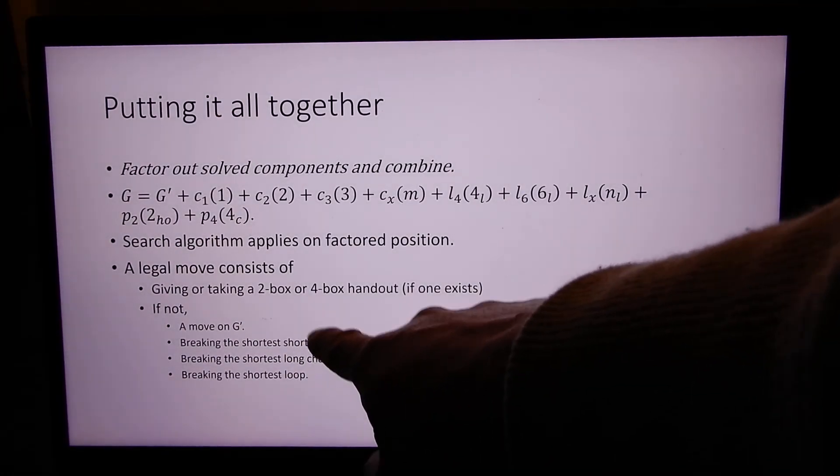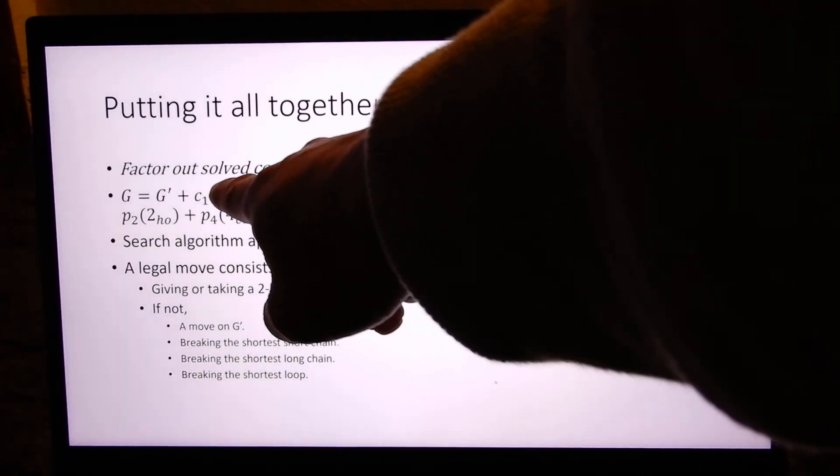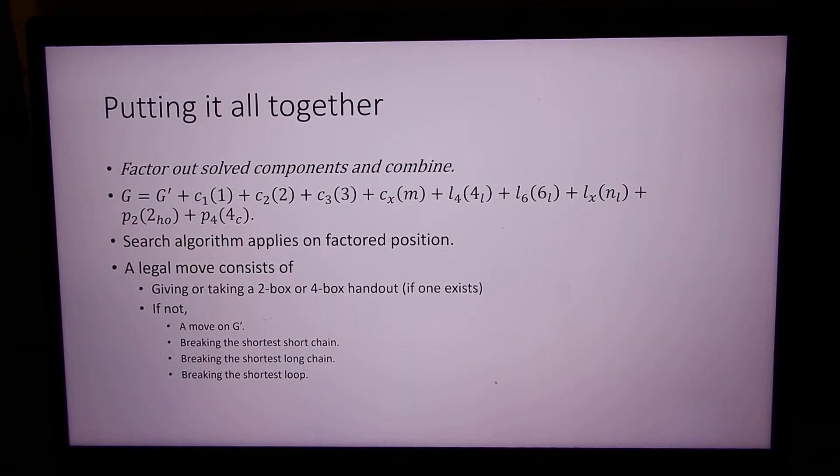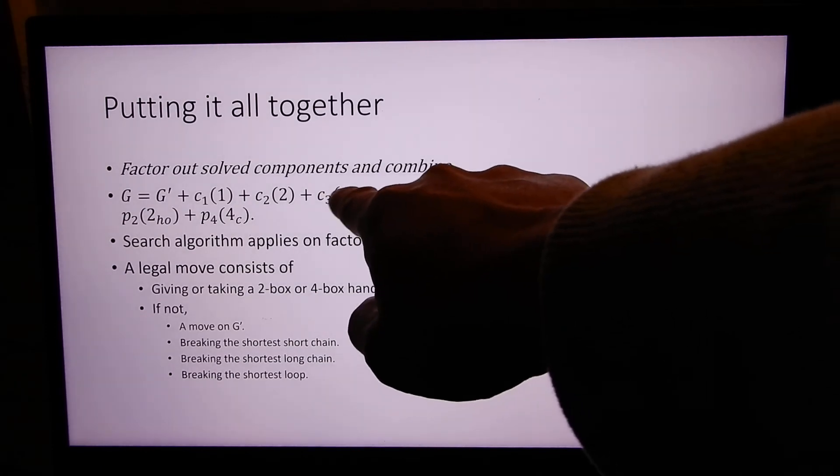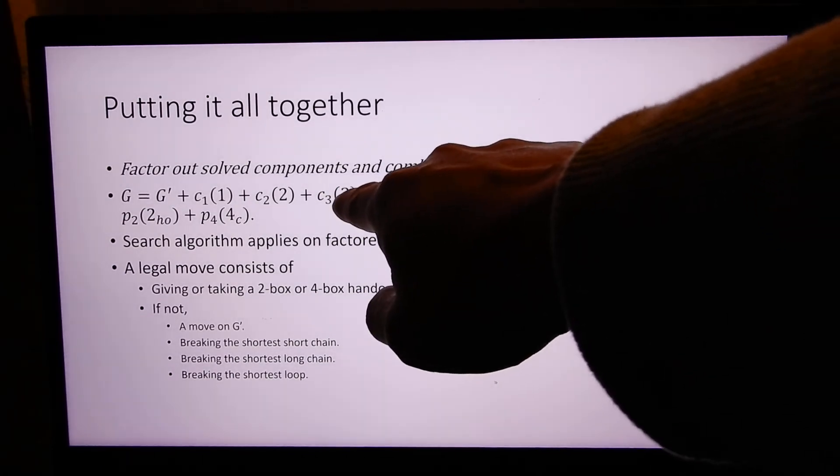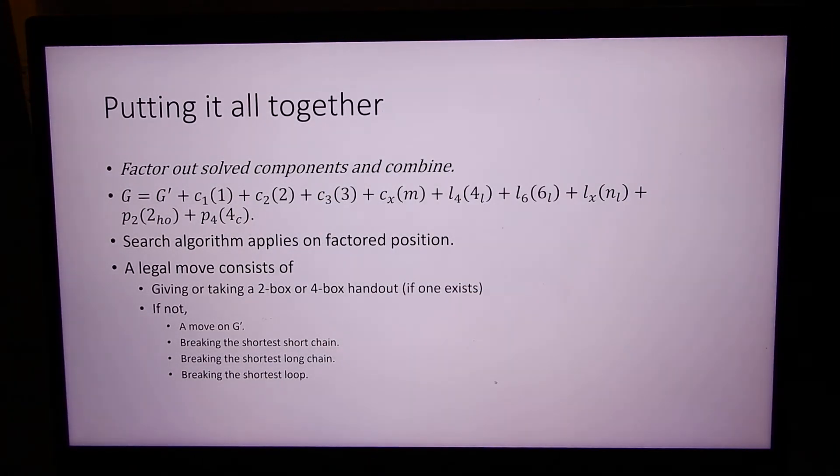We could break the shortest short chain. There's no reason to break a chain of size two if there's a chain of size one. We could break the shortest long chain. If there's a chain of three, we always break that one first, or we could break the shortest loop.